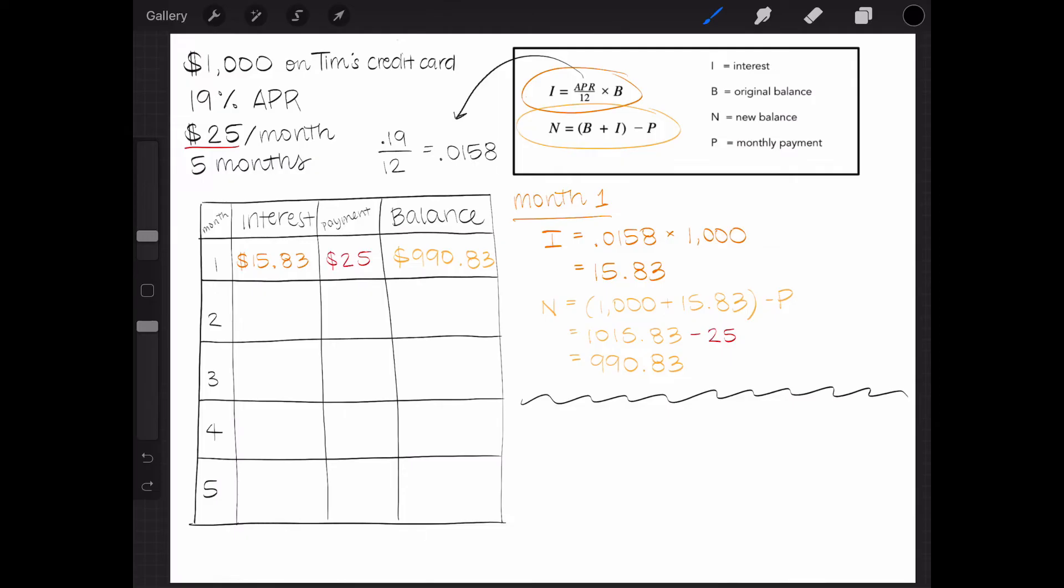Now I'll repeat this process for months 2 through 5, but we need to be careful because we can no longer use $1,000 as the balance, but instead $990.83 to calculate the next month's interest.